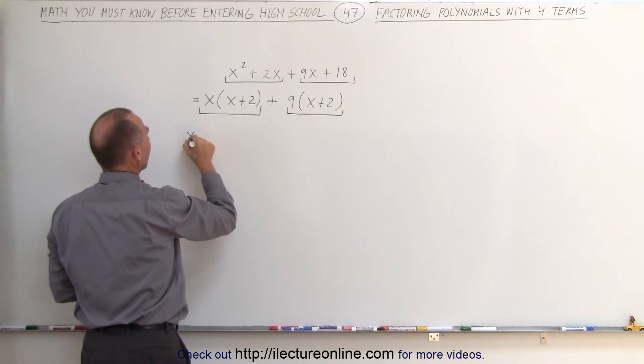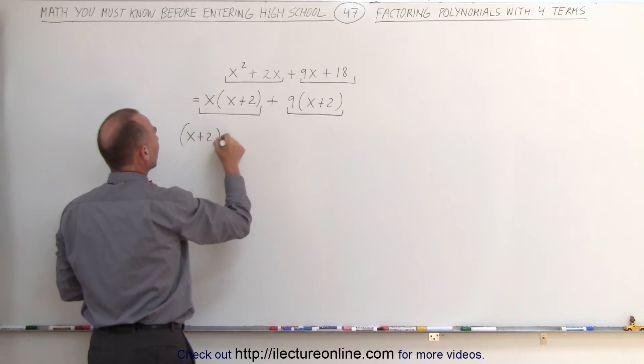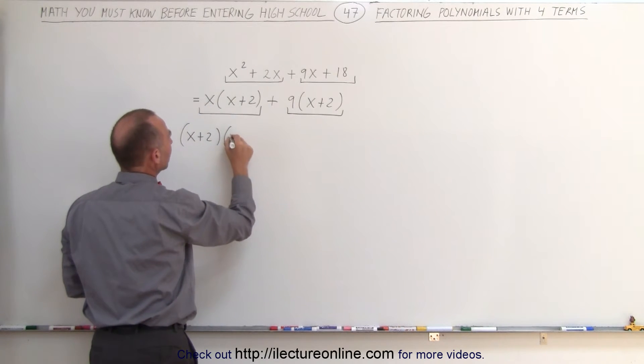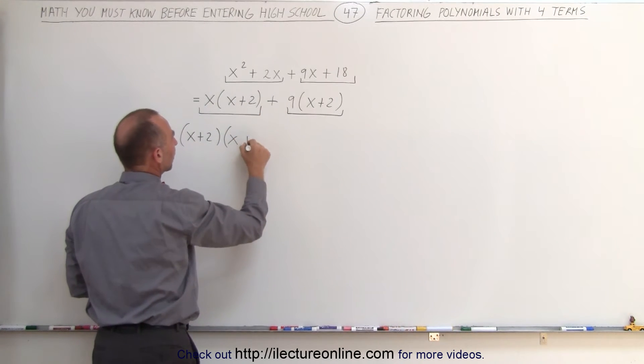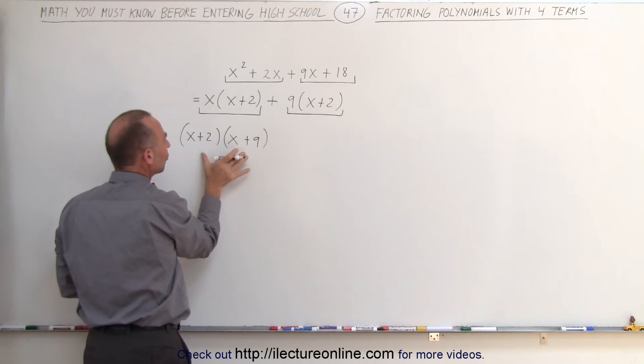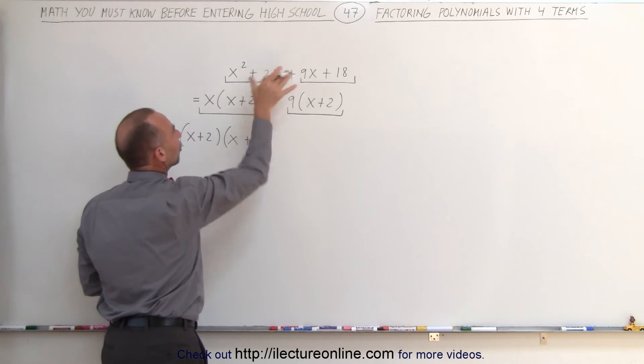When we do that, we get x plus 2 and then we write what we have left. We have an x over here and we have a plus 9 over there, which is left. And this is now the factored form of the original problem.